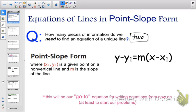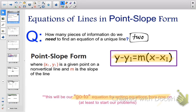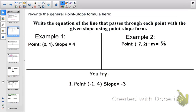So point-slope form is y minus y1 equals m times x minus x1. This is very important. This is going to be our go-to equation for writing equations from now on. So basically, unless you're given the slope and the y-intercept, you're going to put it into point-slope form first. Where x1, y1 is a given point on a non-vertical line, and m is the slope of the line.